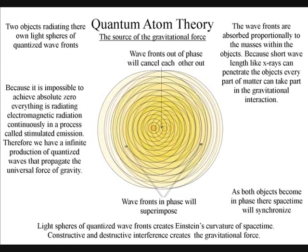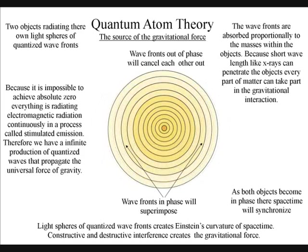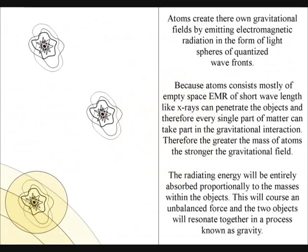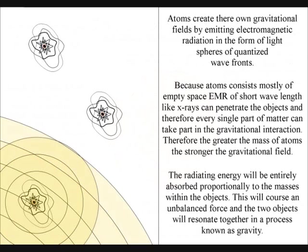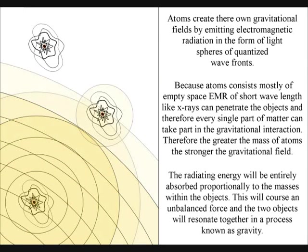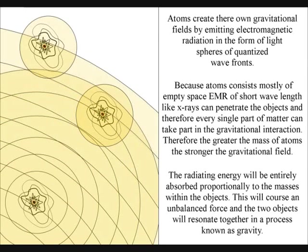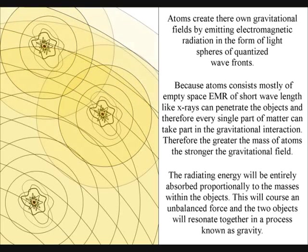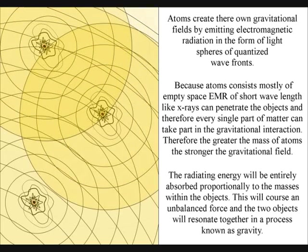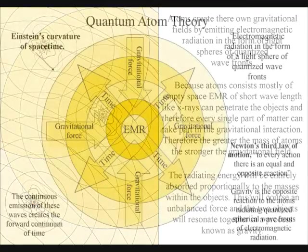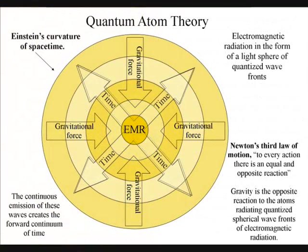Because the atoms consist mostly of empty space, electromagnetic radiation of short wavelengths, like x-rays, can penetrate the objects. Therefore every single part of matter can take part in the gravitational interaction. Therefore the greater the mass of atoms, the stronger the gravitational force. The gravitational field will propagate at the speed of light, therefore there is no instantaneous action at a distance.